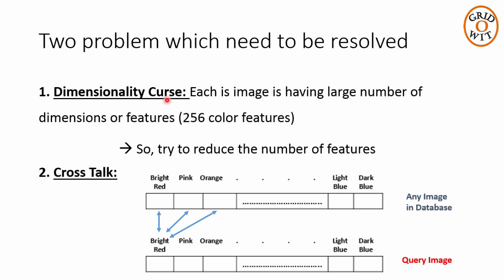Dimensionality curse problem means having large number of dimensions or features. And in this example we have seen each image is having 256 features, which increases the time complexity of comparing two images. So we should try to reduce the number of features first.